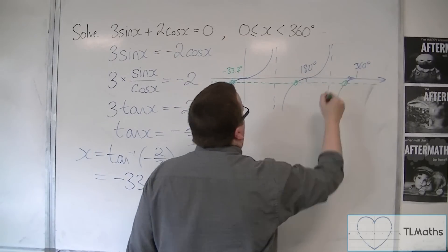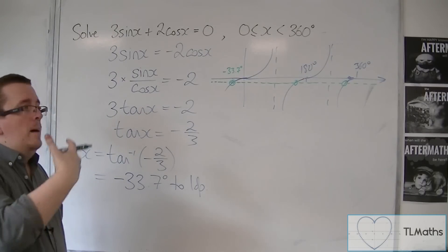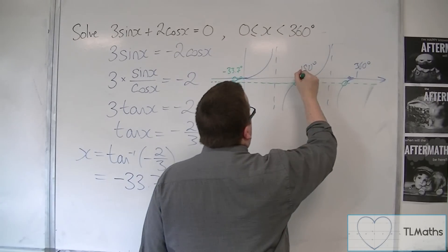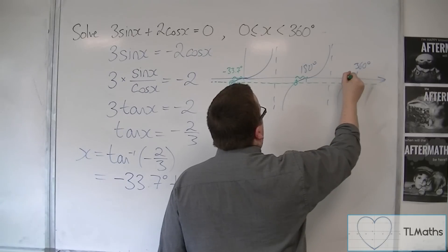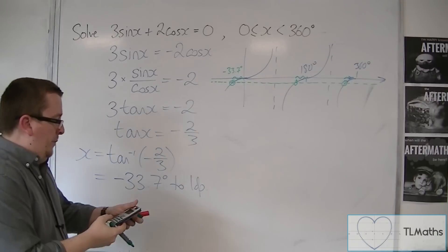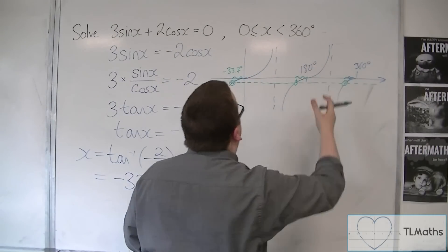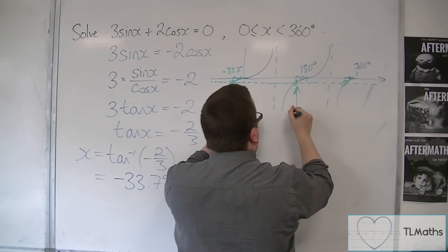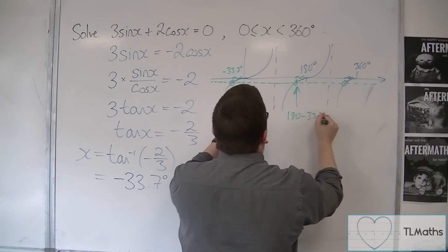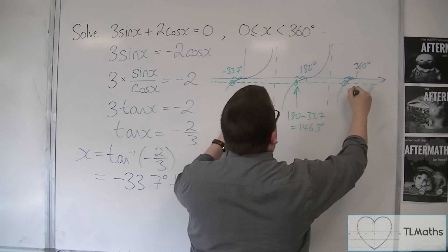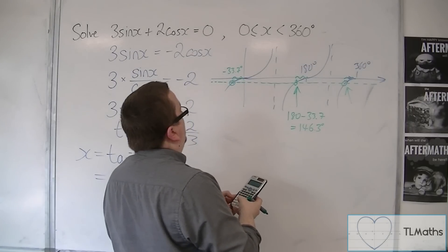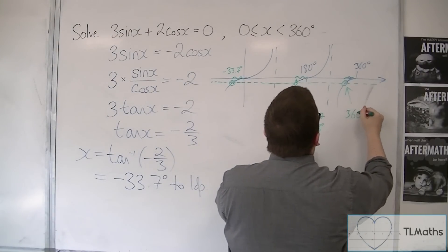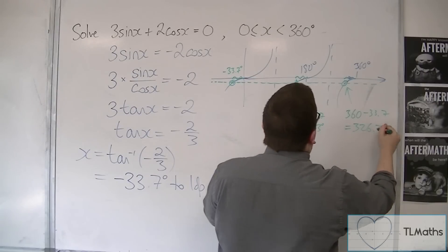But I want this one and that one, and that can be found by adding on amounts of the period of the function. That distance here is 33.7, so this distance will also be 33.7, and so will that distance. So we can add 180, or you can do 180 take away 33.7 — whichever you like. That gets this solution: 180 minus 33.7 = 146.3. And this one is 360 take away 33.7 — or you can add 180 to the previous answer, which gets exactly the same thing — giving us 326.3 degrees.